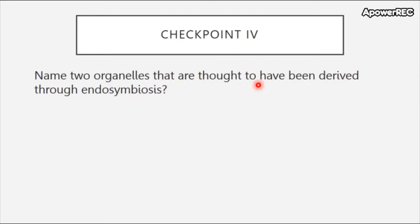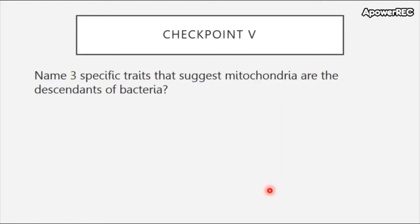Checkpoint four: name two organelles that are thought to have been derived through endosymbiosis. Checkpoint five: name three specific traits that suggest mitochondria are the descendants of bacteria.